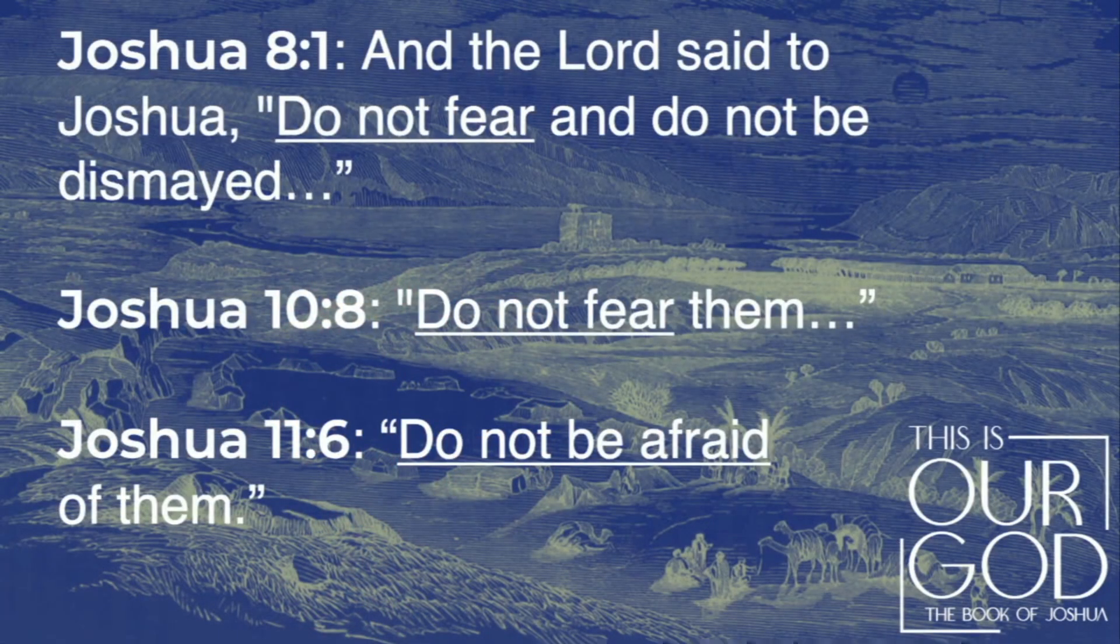Now, focusing specifically here, the Lord calls Joshua to go up against the city of Ai. He says, do not fear and do not be dismayed. Here we are in chapter 10 when the Amorite kings come up against Gibeon and Israel. And the Lord says, do not fear them. Keep reading into chapter 11 when Joshua is facing the kings of the north. The Lord says to Joshua, do not be afraid of them.